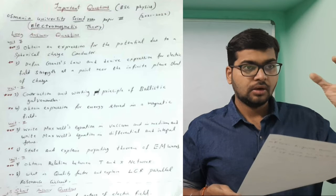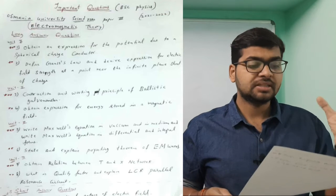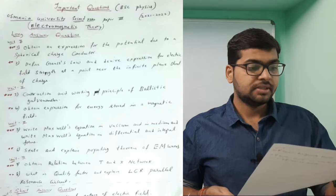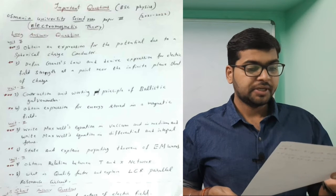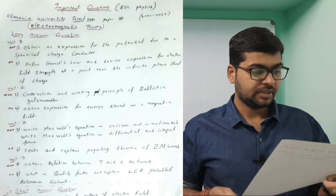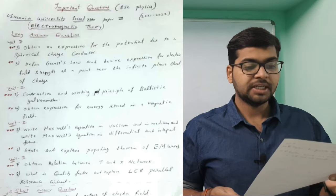Every unit has an important question in the long section. Maximum chances are there to come. First is spherical charge distribution, next is second unit ballistic galvanometer. Fourth question is obtain expression for energy stored in a magnetic field.